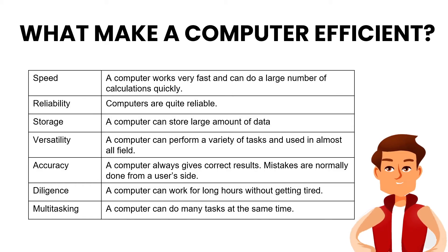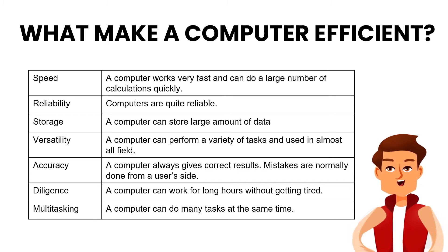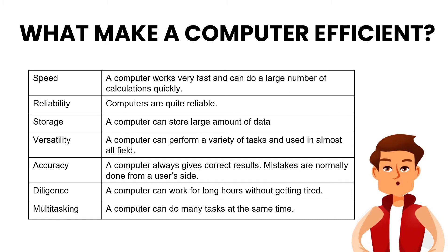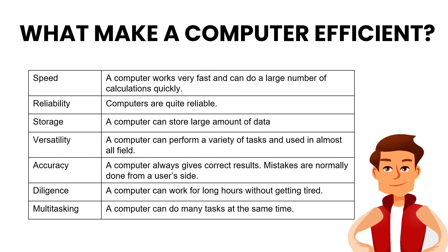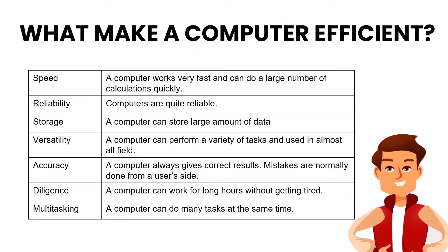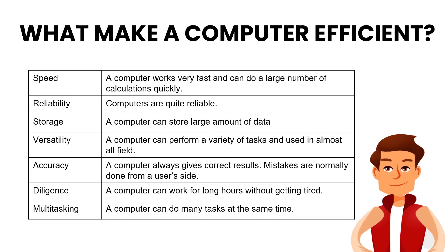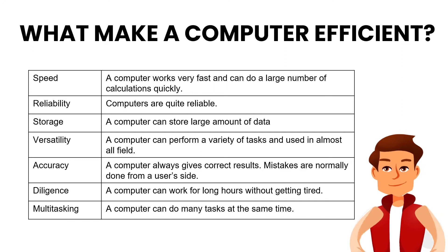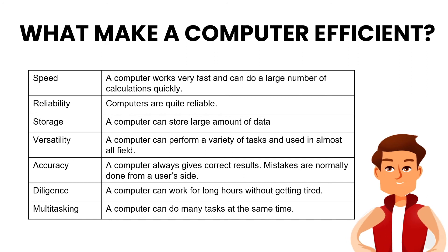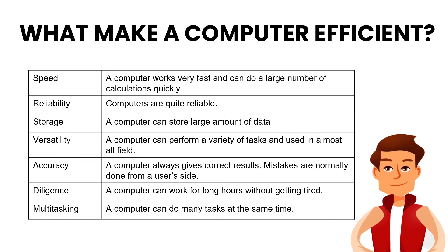What makes a computer efficient? A computer works very fast and can do a large number of calculations quickly. Computers are quite reliable. A computer can store a large amount of data. A computer can perform a variety of tasks and is used in almost all fields. A computer always gives correct results — mistakes are normally made on the user's side. A computer can work for long hours without getting tired. A computer can also do many tasks at the same time.